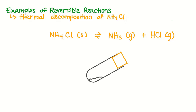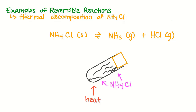NH4Cl, or ammonium chloride, is another white powder. When it's heated, it decomposes, forming two colorless gases: ammonia and hydrogen chloride. If you perform this reaction in a stoppered test tube, you'll notice that as the reaction proceeds, a white powder will form at the cool end of the test tube. This white powder is, in fact, ammonium chloride, the same substance we started off with. When the ammonia and hydrogen chloride gases cool down enough, they react with each other, causing the reaction to go in the reverse direction and form ammonium chloride again.